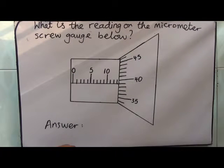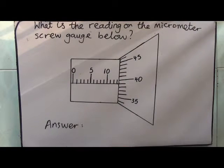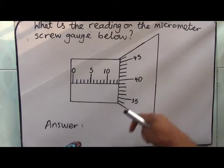Let's take for instance we are asked to read the micrometer screw gauge in this diagram. How do you read it? Remember this is called the main scale and this one here is the Vernier scale.